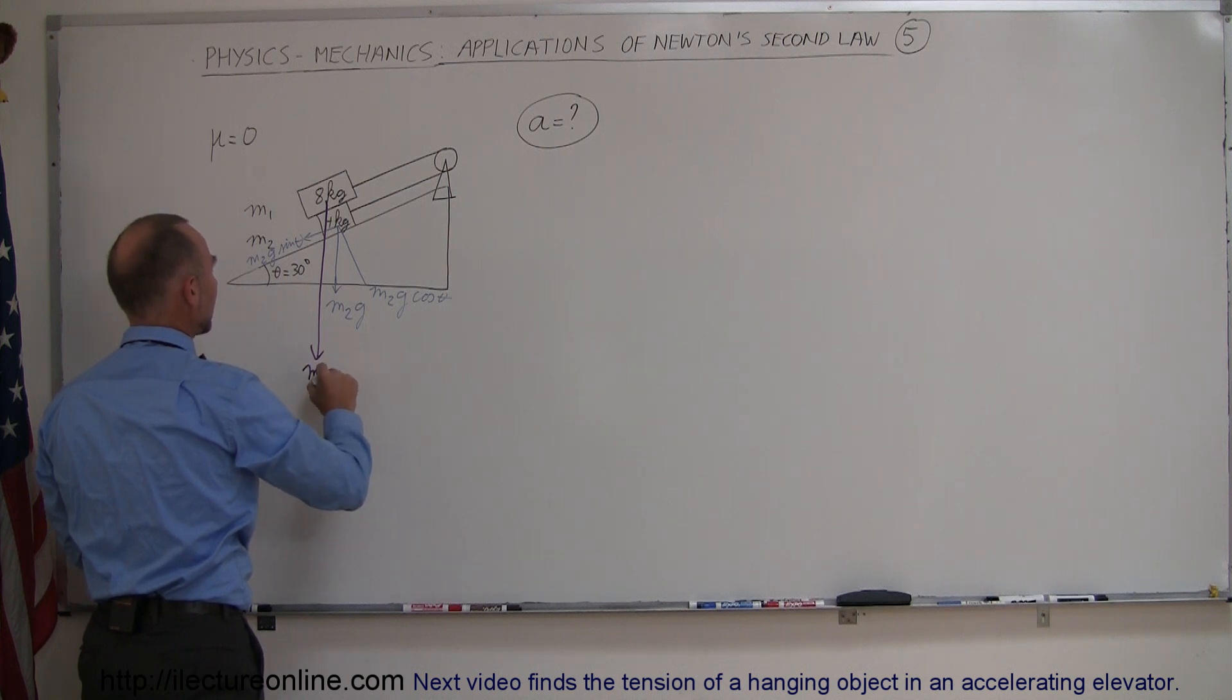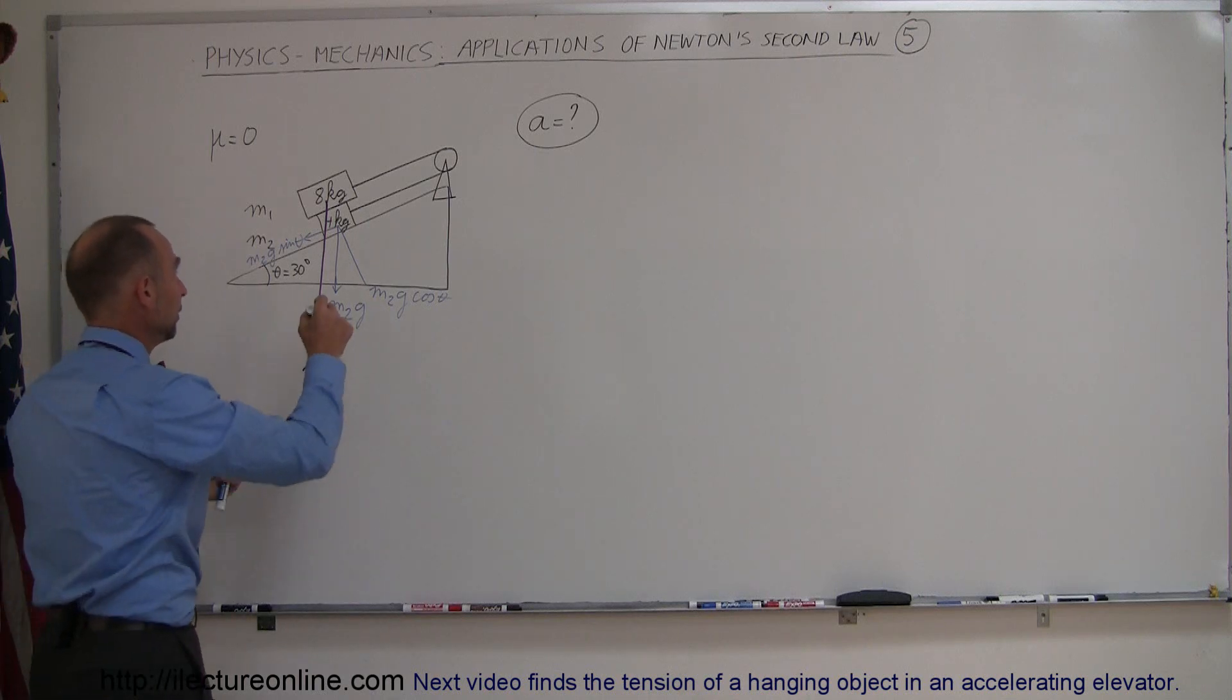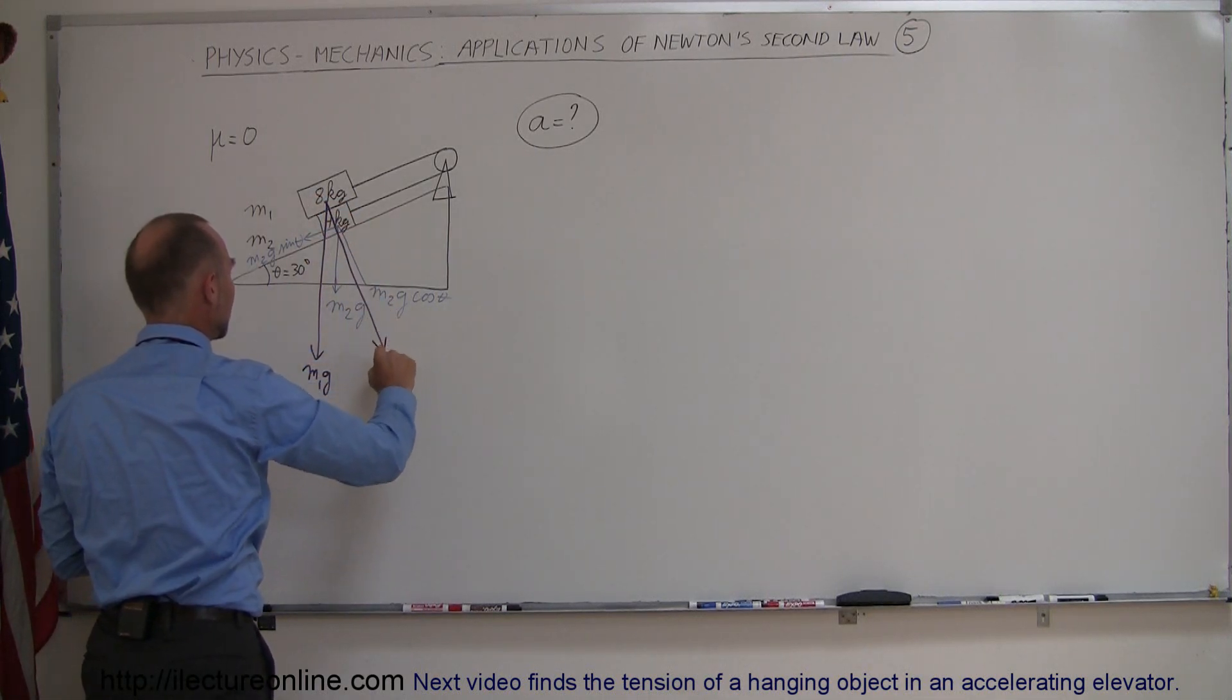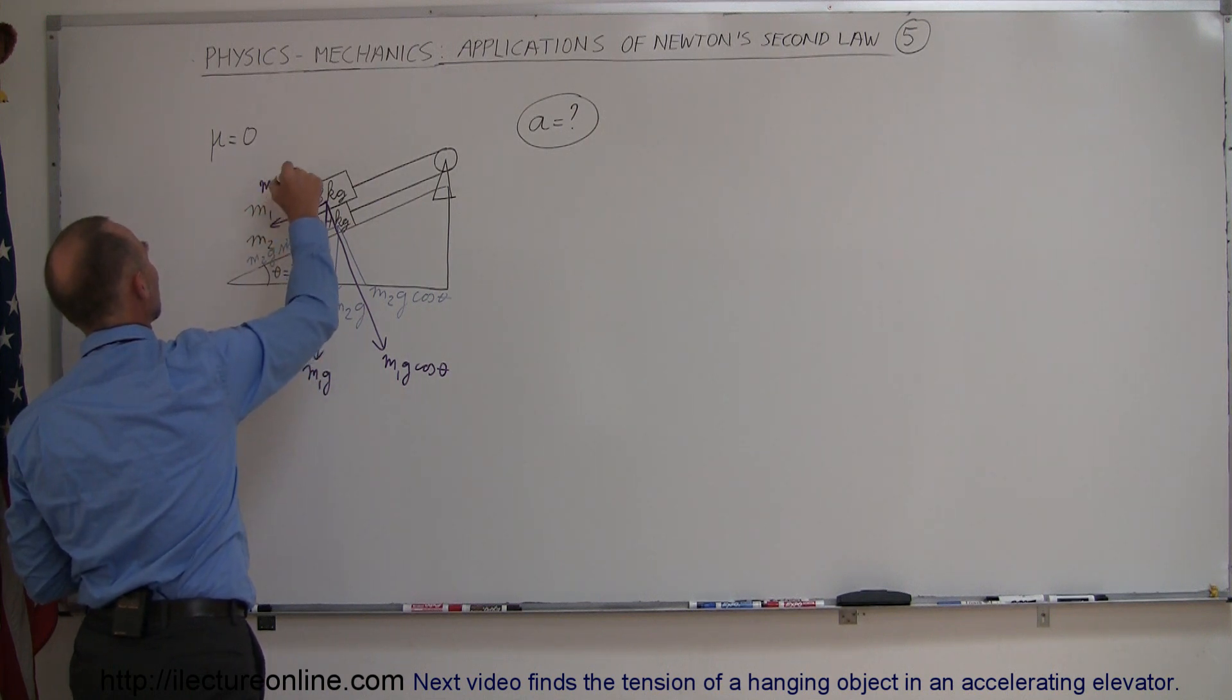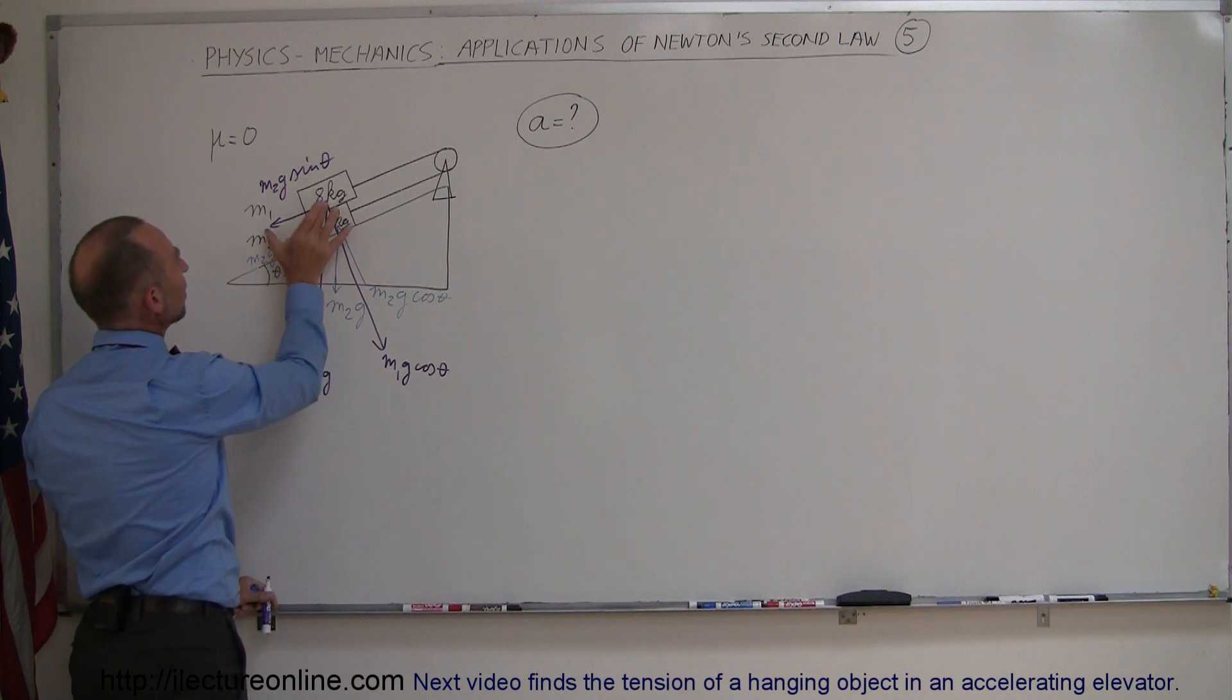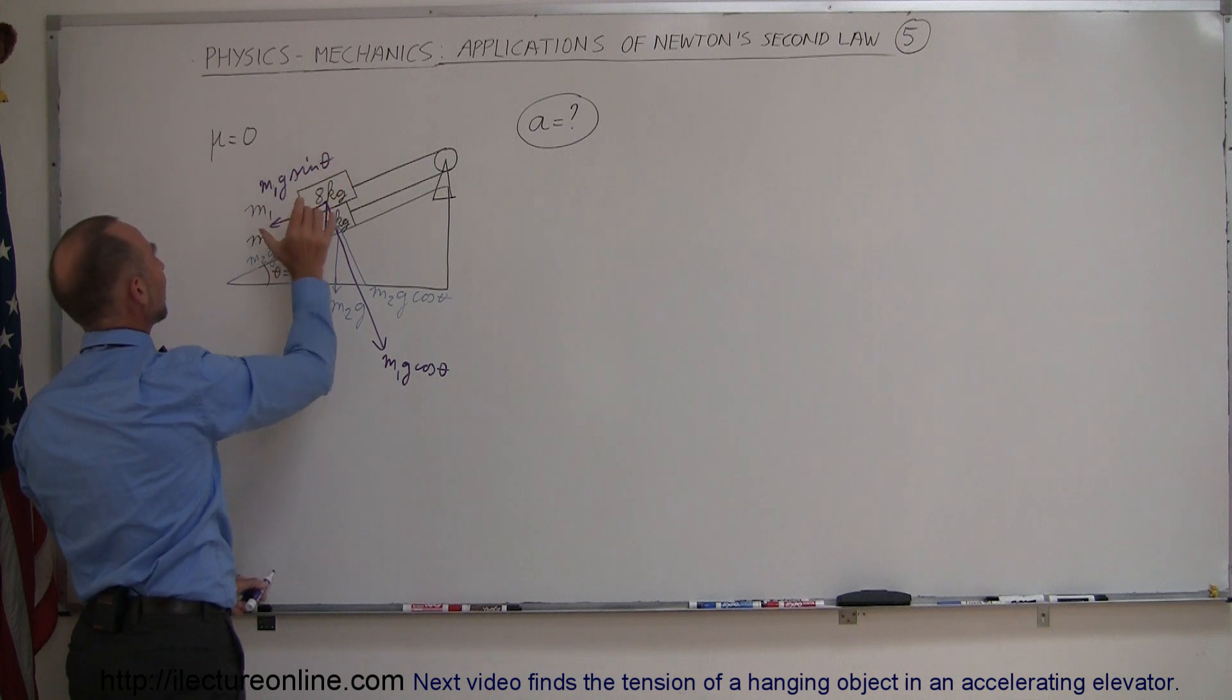So this would be the m1g, the weight of the heavier mass, obviously I indicated that with a longer vector arrow, then here would be the perpendicular component to the incline, this would be m1g times the cosine of theta, notice the angle of course is the same. This here would be the m1g times the sine of theta and you can see that the m1g sine theta is bigger than the m2g sine theta.